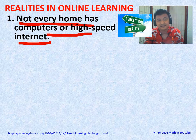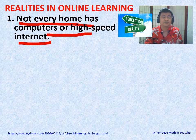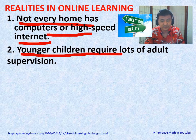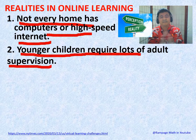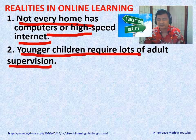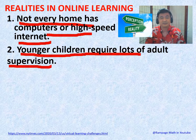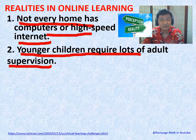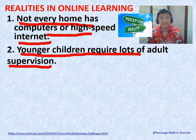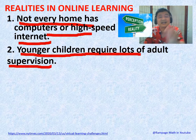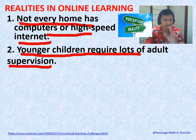Sometimes siblings fight over one device because there are three of them sharing it — much more so for ordinary families. Number two: younger children require lots of adult supervision. It's difficult for lower grades like pre-K, kindergarten, and grades one through three, because managing a computer, getting their attention, and following steps one, two, three, four is not easy. You will need the help of an adult — but is there always an adult at home who can guide them?